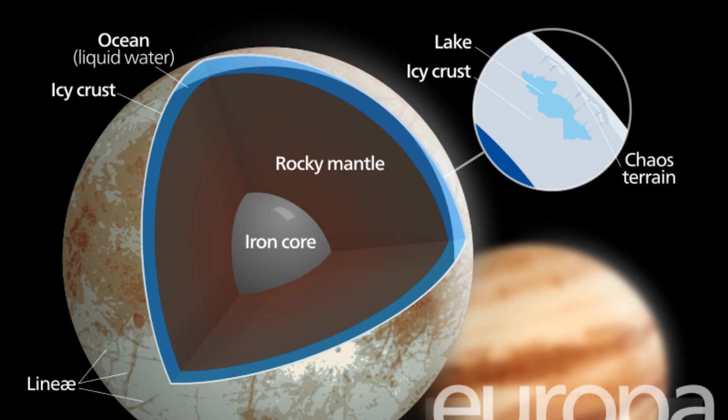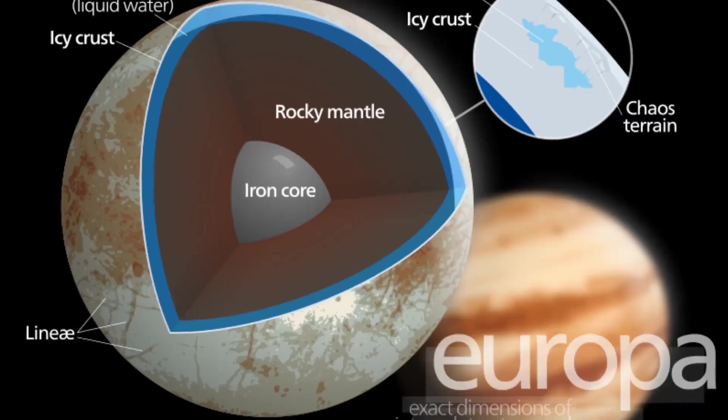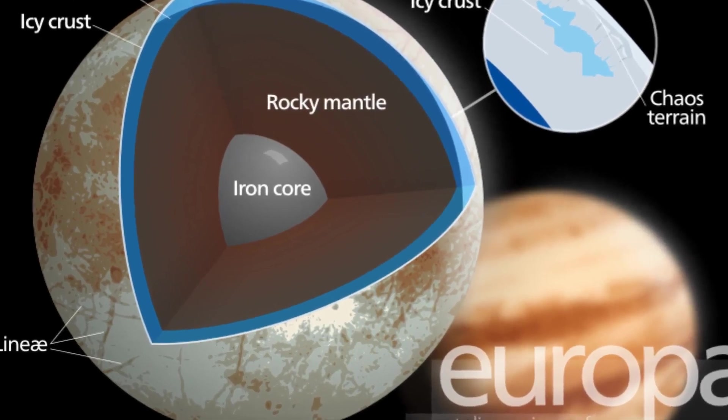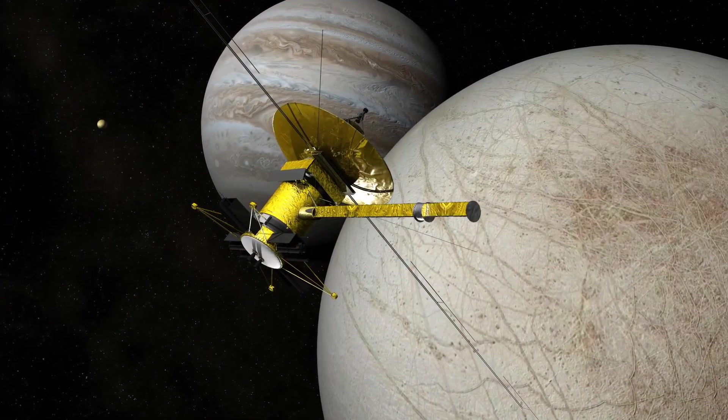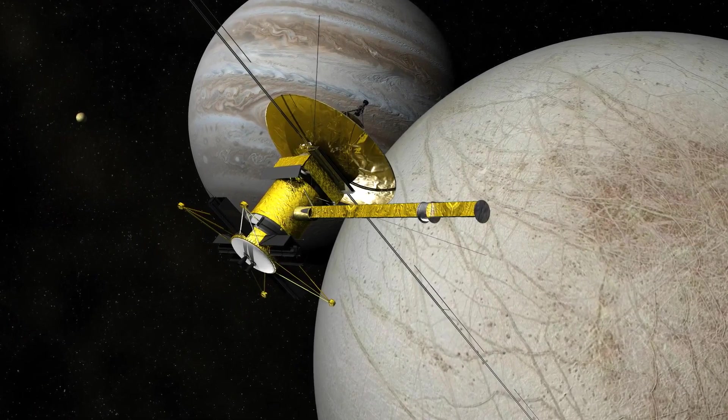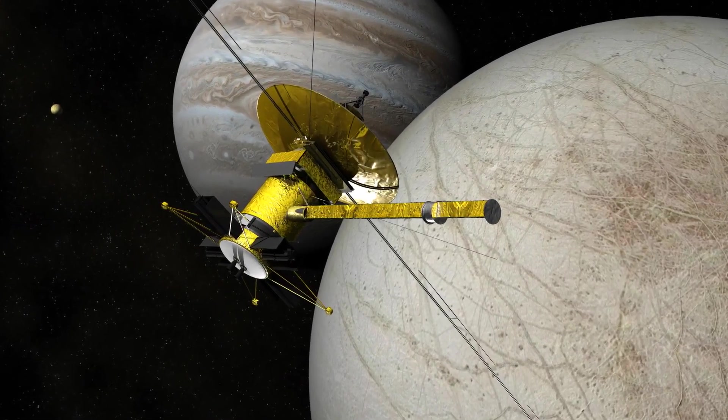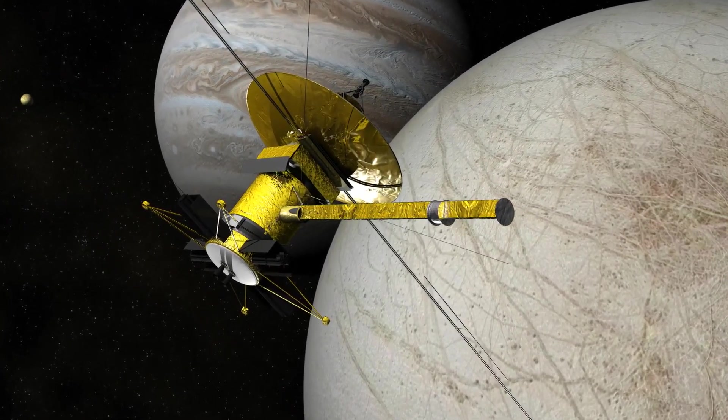The existence of liquid water on Europa was gradually revealed by a series of space missions spanning decades. Six robotic spacecrafts took photos of the Galilean moon starting in the early 1970s, when Pioneer 10 and Pioneer 11 flew by Europa.